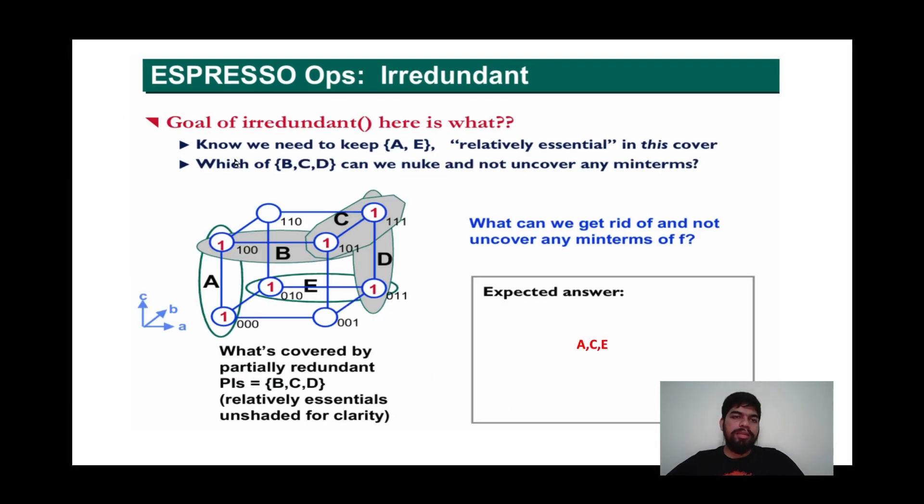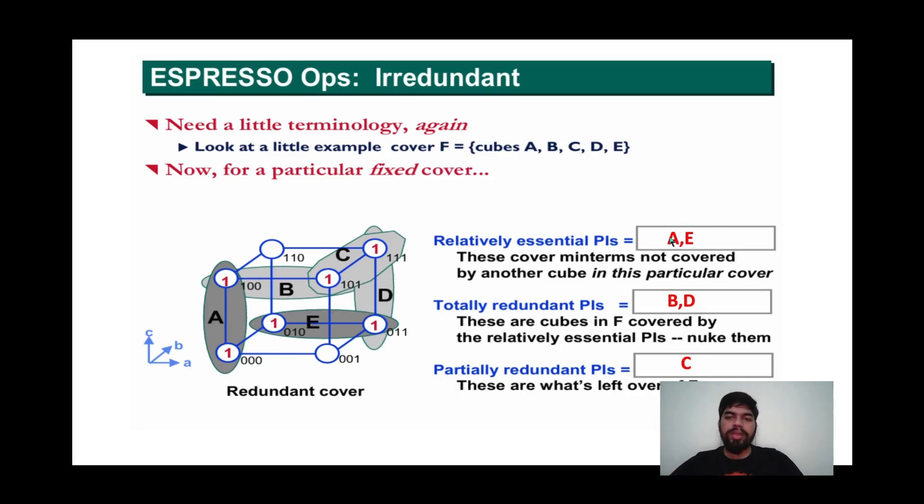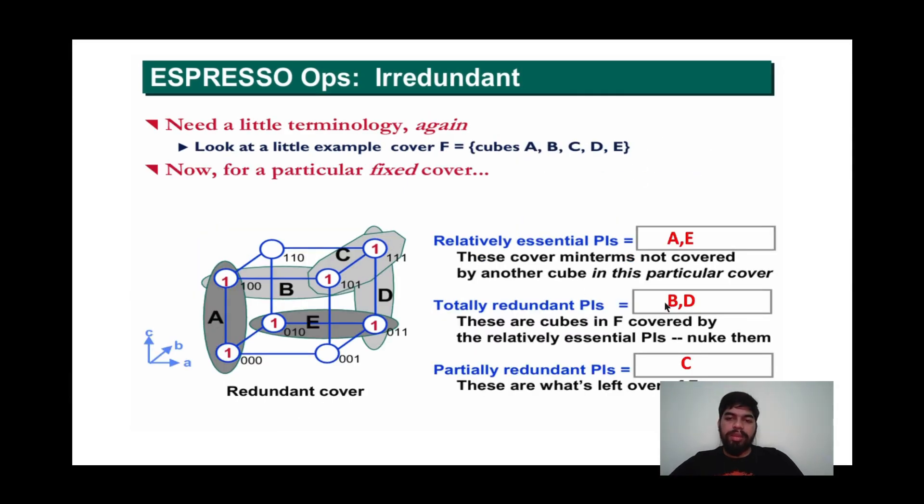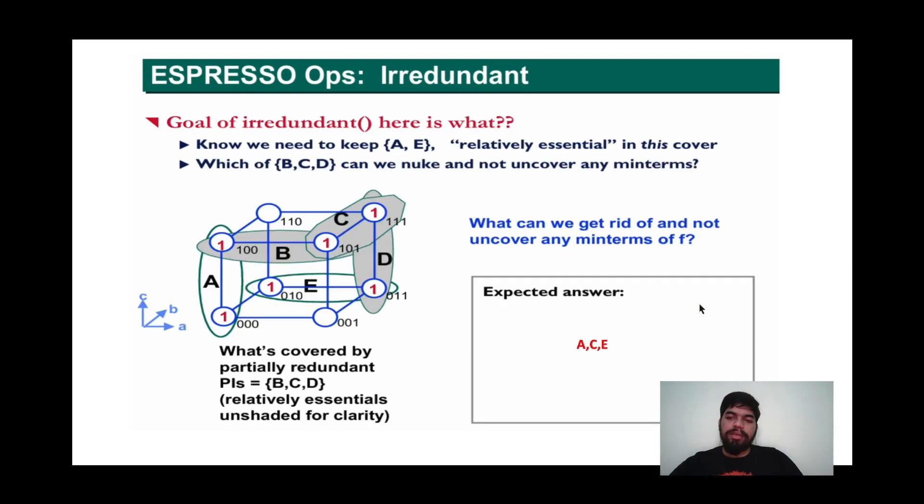In the next slide, we can see that we need to keep cube A and cube E because these are relatively essential in this cover. Previously we saw that cube A and cube E are relatively essential. And which of cube B, C, and D we can nuke without uncovering any minterms? We can see that cube B and cube D are totally redundant, and cube C is partially redundant. Then we remove cube B and cube D. Here we can see the answer expected, which is cube A, cube C, and cube E, because cube B and cube D are totally redundant, therefore we remove or nuke them.